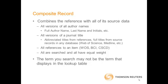All versions of all author names, including last name, first name if available, and initials, are included. All versions of a journal title, including abbreviated titles from references or full titles from any database in which the journal occurs, are included. All references to a particular item from any Web of Knowledge citation database are searched, and all have equal weight.